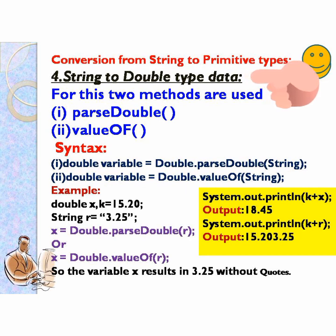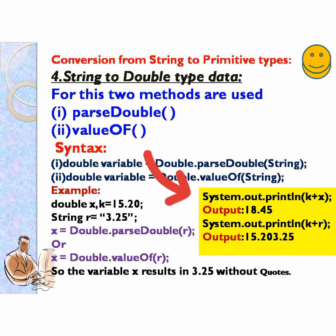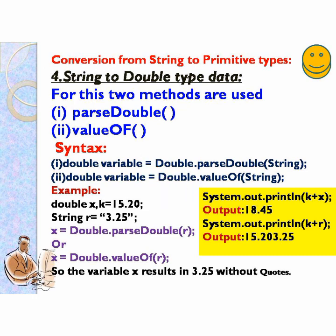Next, string to double type. Here also two methods: parseDouble or valueOf. Syntax: double variable equals to Double.parseDouble(string), or double variable equals to Double.valueOf(string). For example, double x, k equals to 15.20, String r equals to "3.25". Using x equals to Double.parseDouble(r) or Double.valueOf(r), the variable x results in 3.25 without quotes. System.out.println(k + x) gives 18.45 since both are double. System.out.println(k + r) gives a string format output.